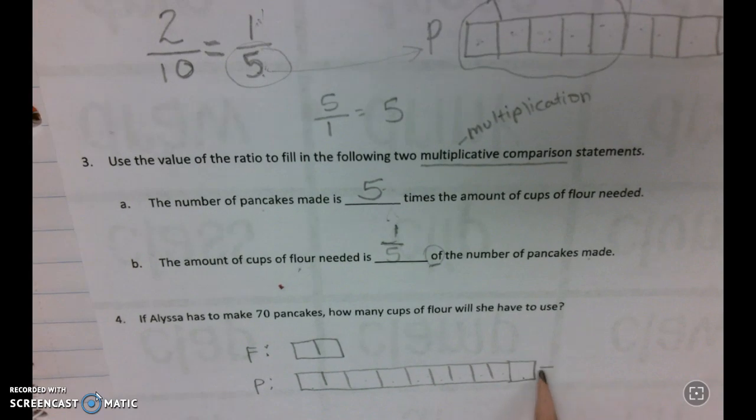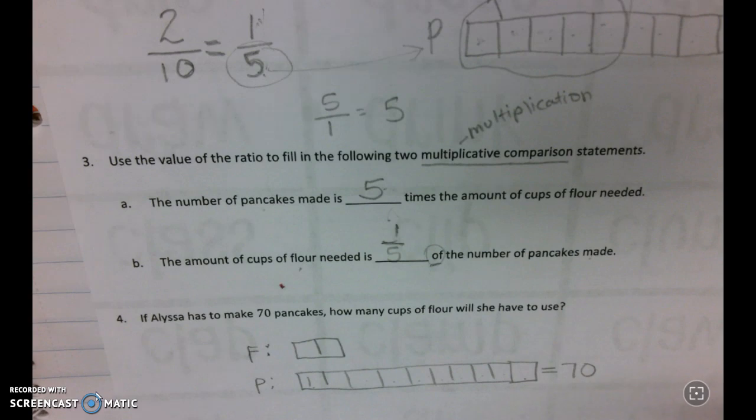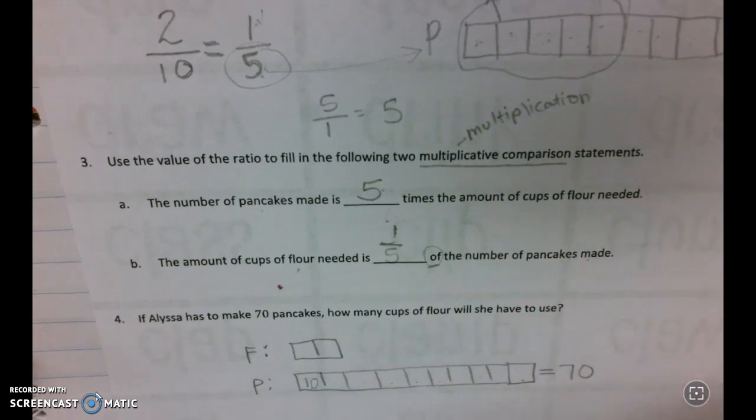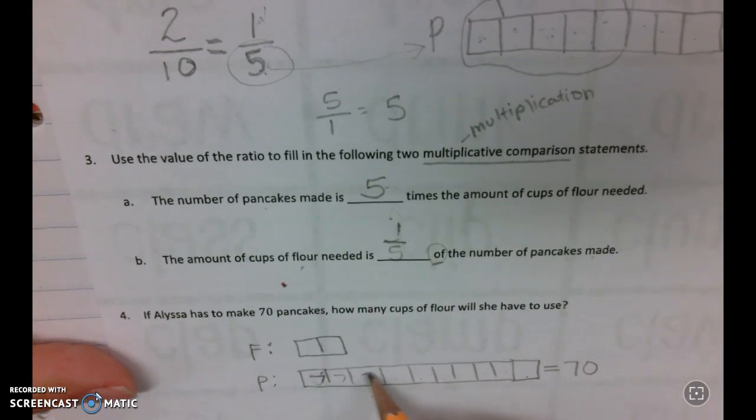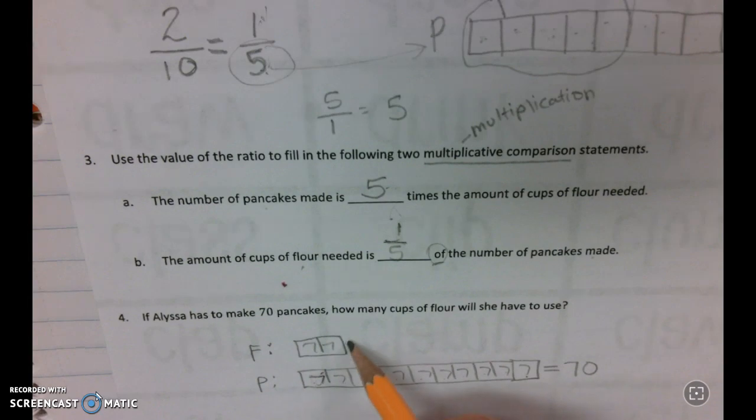And we know that pancakes equals 70, we know there needs to be seven in each box. Therefore, we need two groups of seven cups of flour, which would equal fourteen cups of flour.